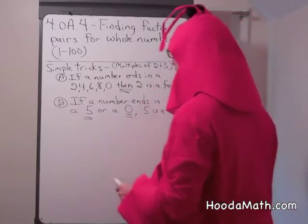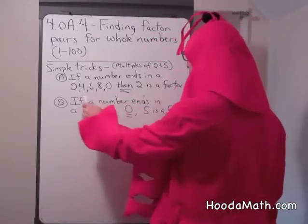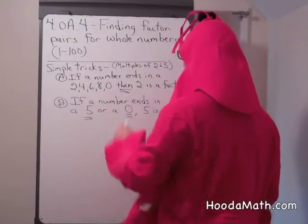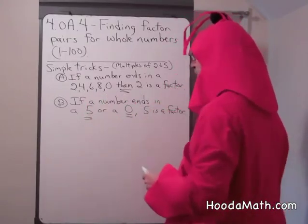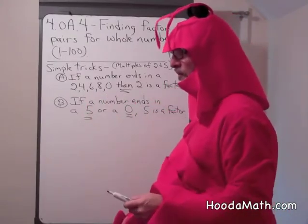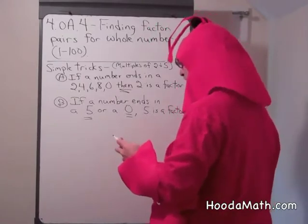Multiples of 2 and 5. If a number ends in 2, 4, 6, 8, or 0, then 2 is a factor, or that number is a multiple of 2. Let me give you some examples.